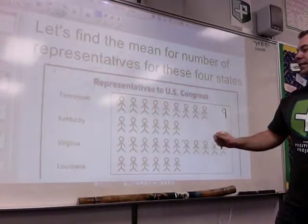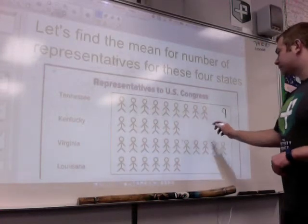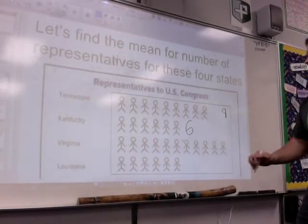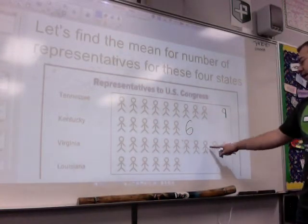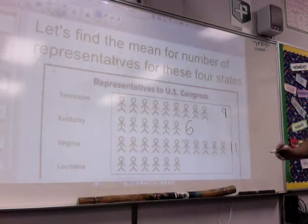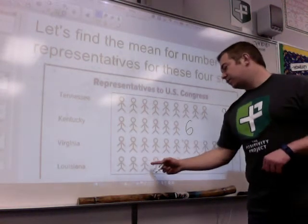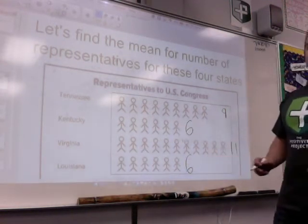So I'll write a 9 there. Kentucky has 2, 4, 6. Virginia has, well, if I know this is 9, then 10, 11. And then Louisiana has 2, 4, 6 as well. I could have saw that they were the same.